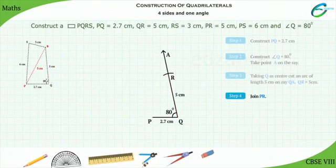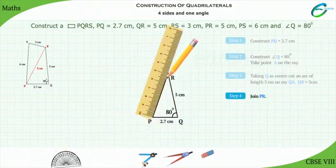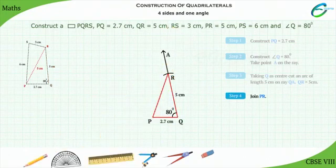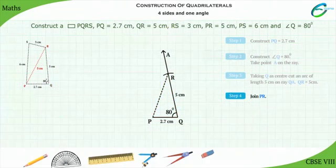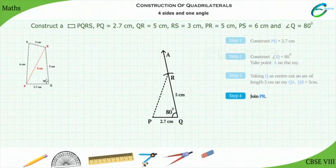Step 4: Now join PR to complete triangle PQR. The diagonal was not given in the problem, but we draw this diagonal to make the construction easier further.